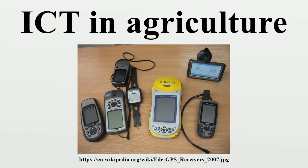Any system applied for getting information and knowledge for making decisions in any industry should deliver accurate, complete, and concise information in time or on time. The information provided by the system must be in user-friendly form, easy to access, cost-effective, and well protected from unauthorized accesses.